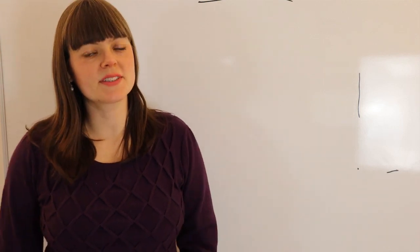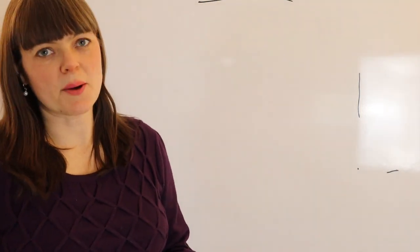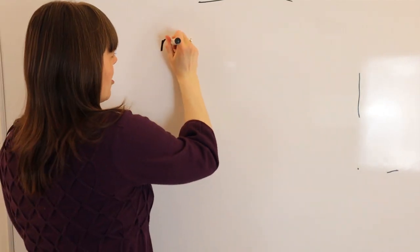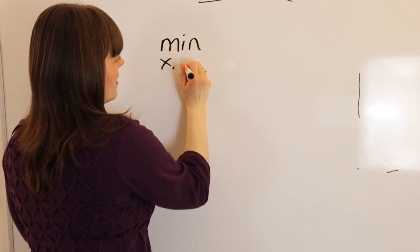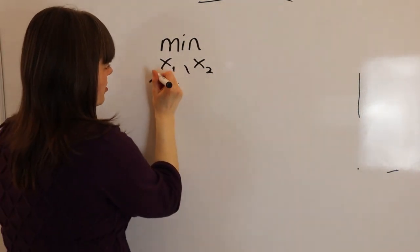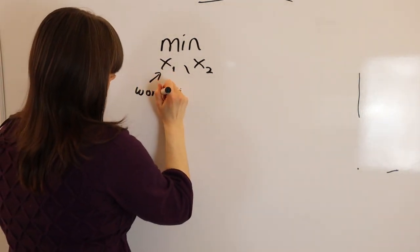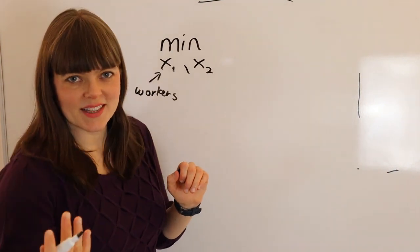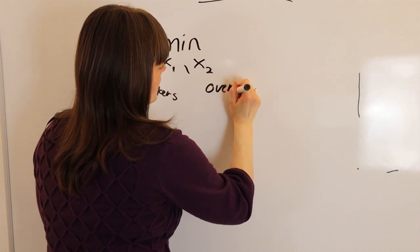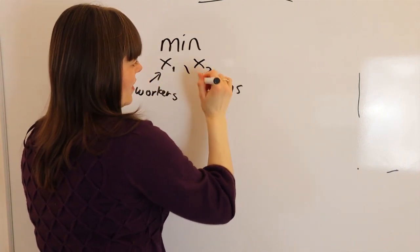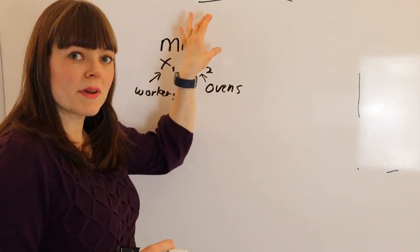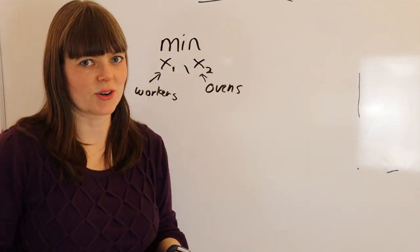I'm going over cost minimization, and this matches the chapter from Hal Varian's book on cost minimization. We're going to start out by minimizing by choosing x1 and x2, where x1 and x2 are inputs such as workers and pizza ovens — I'm going to make this an example of a pizza shop. Ovens are some kind of capital; capital can be computers, robots, or lots of different things.